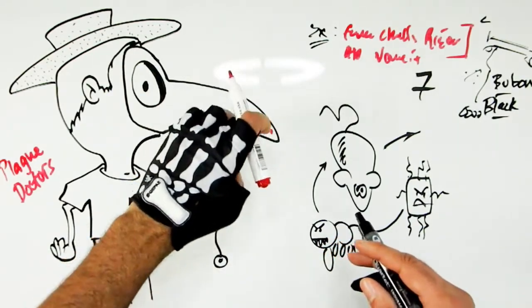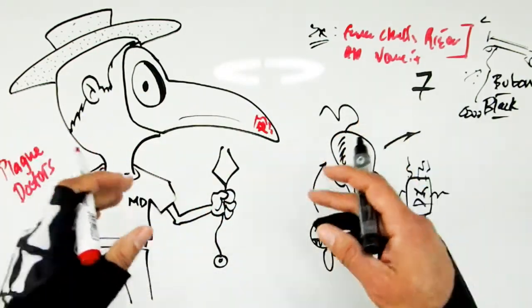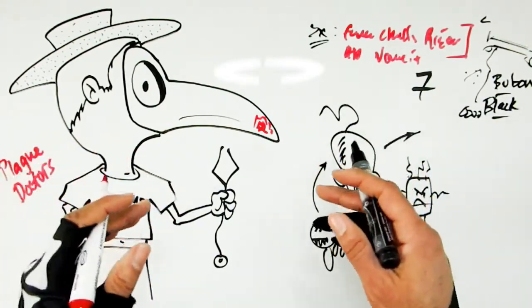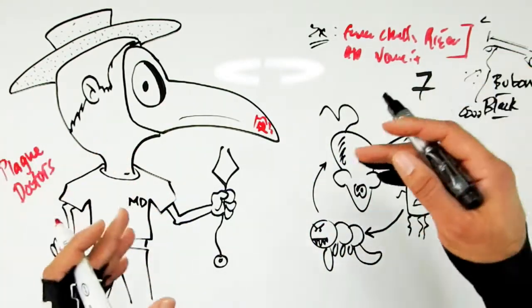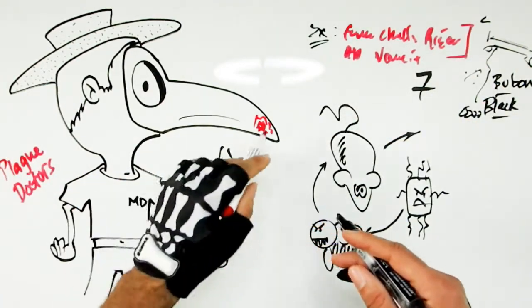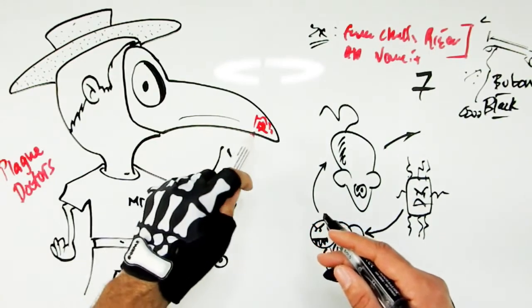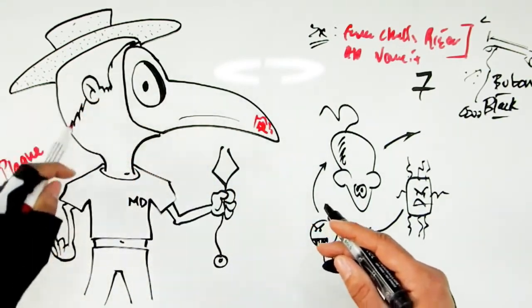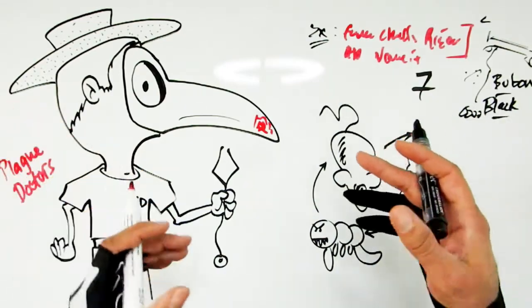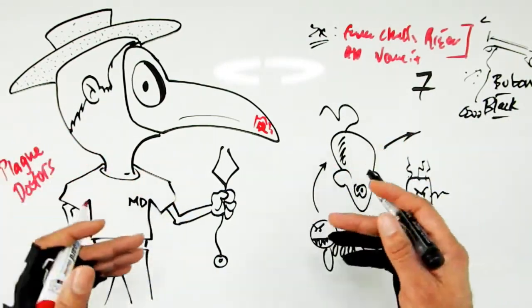So he would don this mask here with different special herbs like myrrh and zinc and I can't remember all the different ones, I think even stuff like paraffin and there's a bunch of other weird stuff that today makes absolutely no sense but anyway back then it made sense to them. So they would stuff it with this thing here and then that was supposed to protect the occupant.